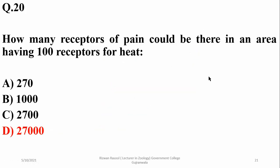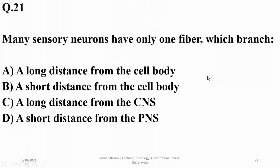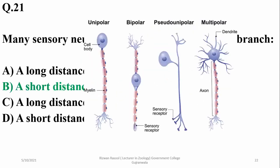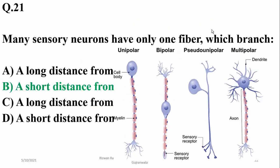Question 21: many sensory neurons have only one fiber which parts a short distance from the cell body. As you can see, most sensory neurons are in a unipolar configuration.